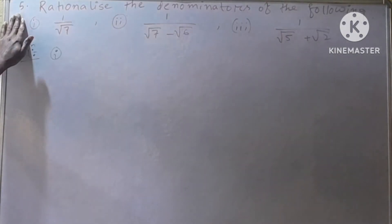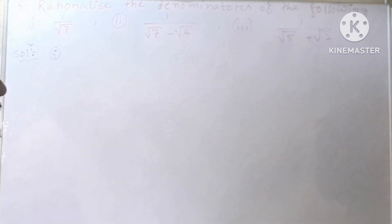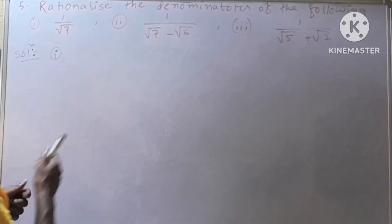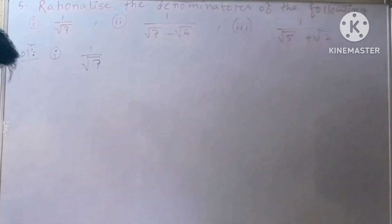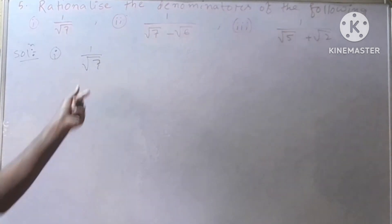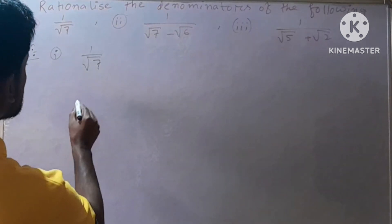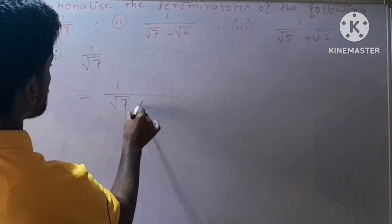Our next question is question number 5. The question says: rationalize the denominators of the following. Some irrational numbers are given and we have to rationalize the denominator of each. Number 1 is 1 by root over 7. Since the denominator is root over 7, it is irrational, so we have to rationalize it. We will multiply both numerator and denominator by root over 7.